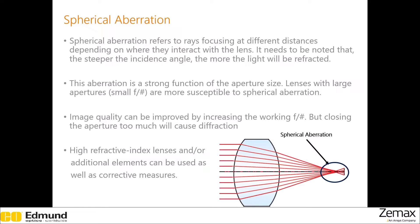To fix this aberration, you can reduce the aperture size, but that comes at the expense of reduced resolution. You can also use high index lenses or aspheric surfaces to control spherical aberration. Additional optical elements can be introduced in the system to distribute the incidence angles in order to reduce or control this spherical aberration.